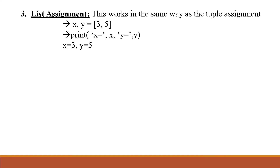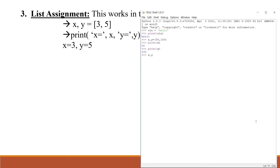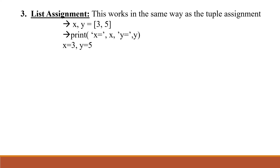Next, list assignment. This works in the same way as tuple assignment. For example, if we take x, y with values, then print 'x is equal to', x gives the output as x equal to 3, and print 'y is equal to', y gives the output as 5.